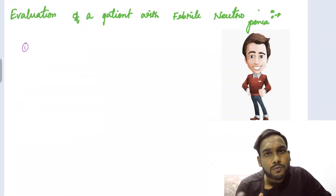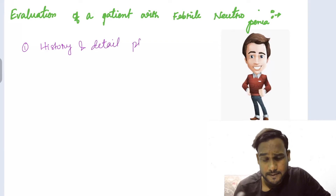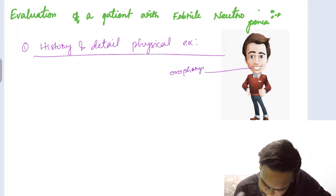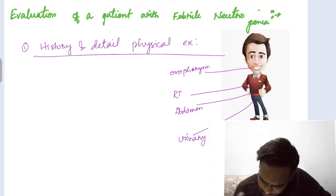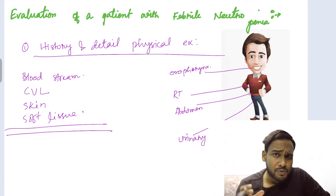For evaluation of a patient with febrile neutropenia, we first try to find the foci of infection. A thorough history and detailed physical examination should be done. You have to examine the oropharynx, respiratory tract, abdomen, perianal area, and urinary tract. You also have to rule out blood infection via central venous line, and assess the skin and soft tissue to try to find the foci and treat accordingly.